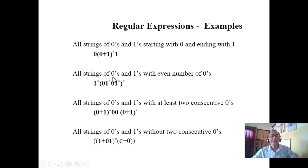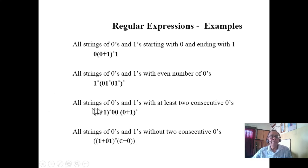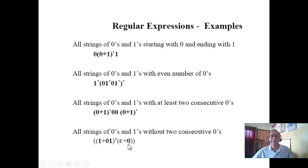All strings of 0s and 1s with even number of 0s — how to make even number of 0s. This is the way: anything can come in between, and there are other ways too — you can have another expression. All strings of 0s and 1s with at least two consecutive 0s — I put two 0s fixed, then anything can come before and after. This is a clever way; there may be other expressions. All strings of 0s and 1s without two consecutive 0s — you make it this way, so never two consecutive 0s are coming.